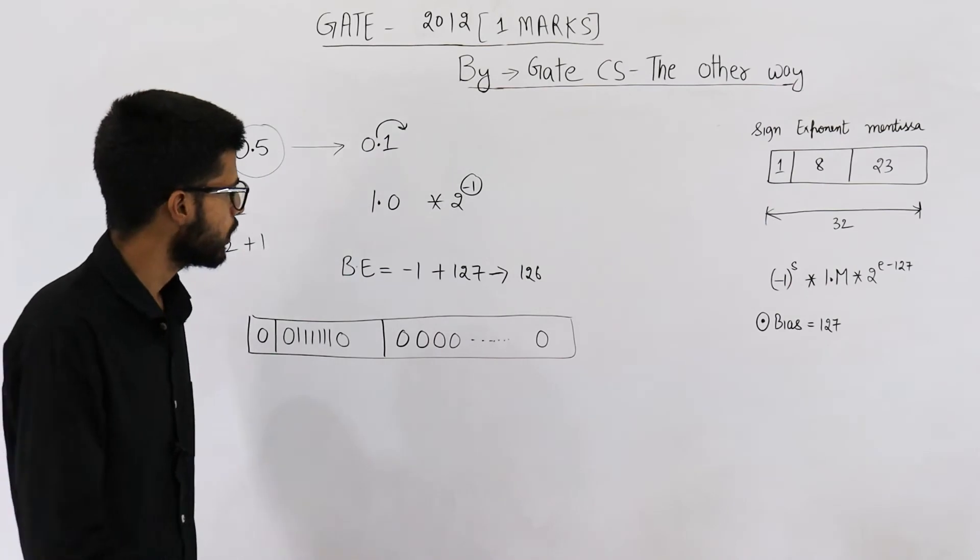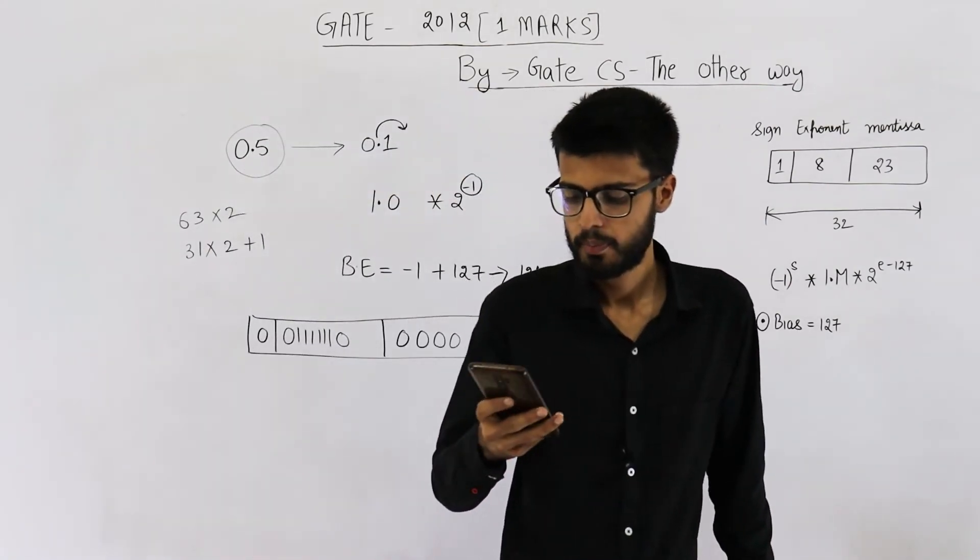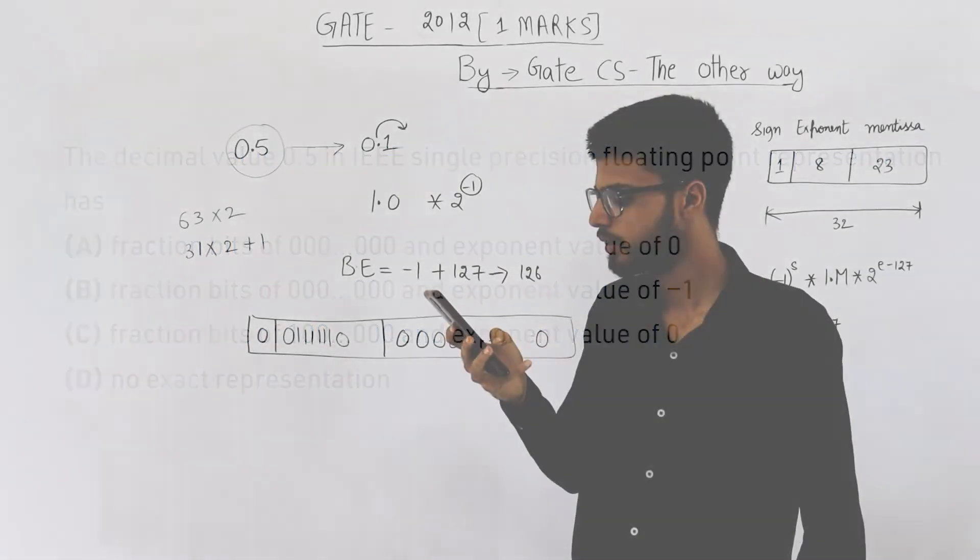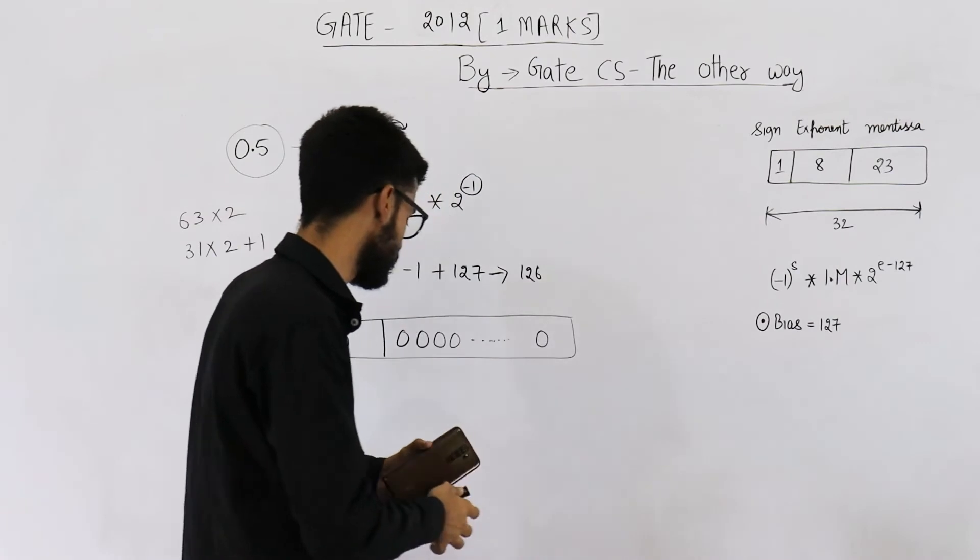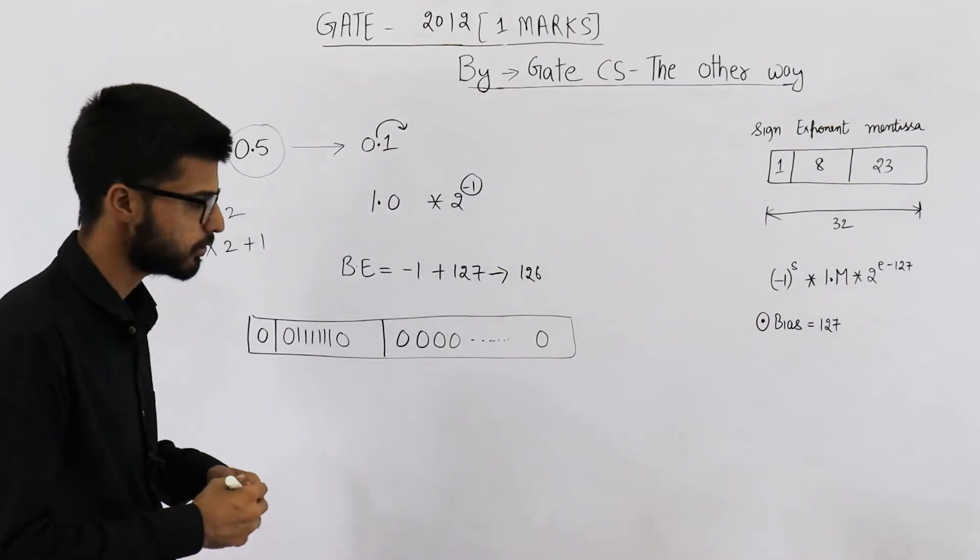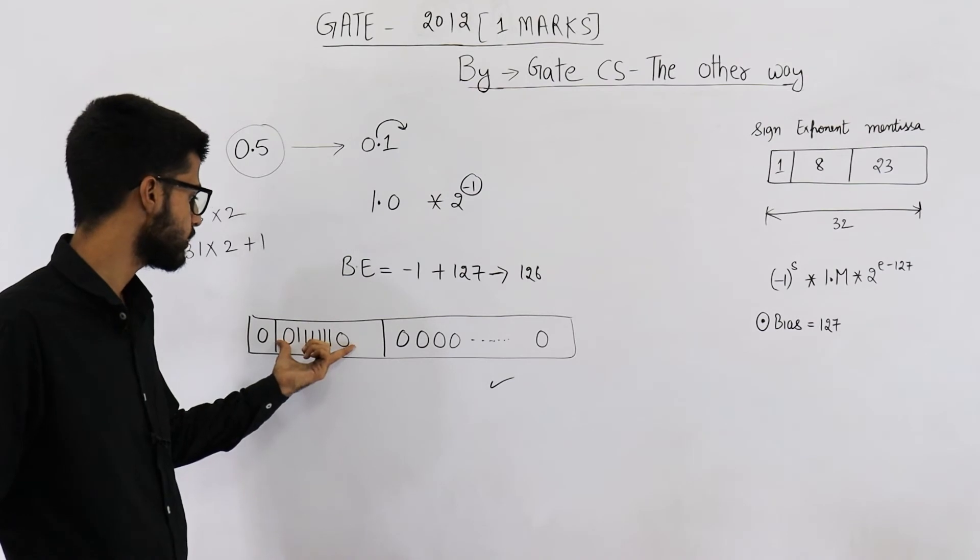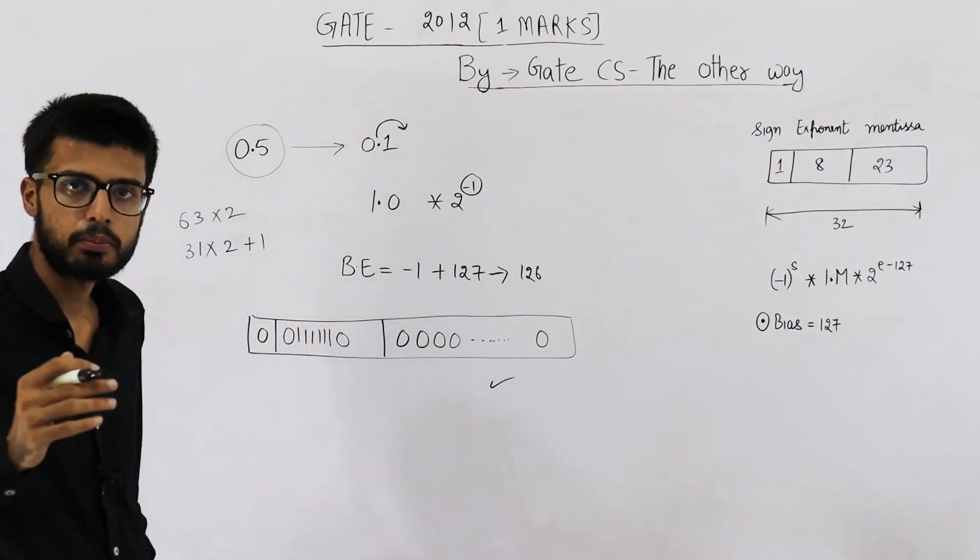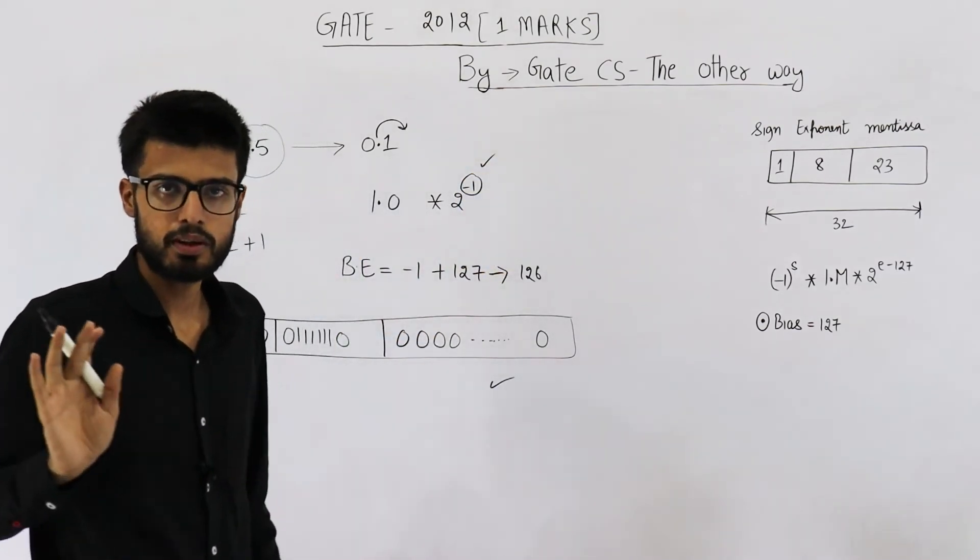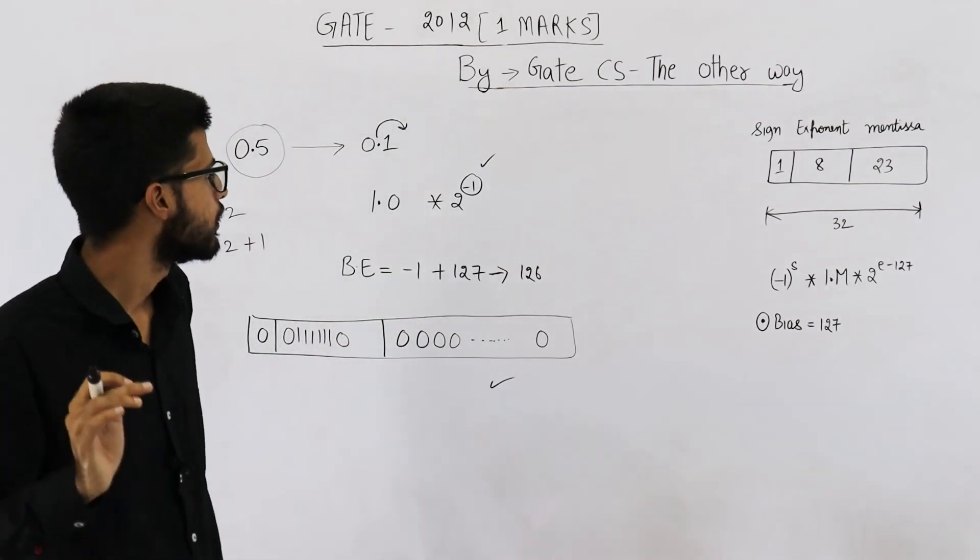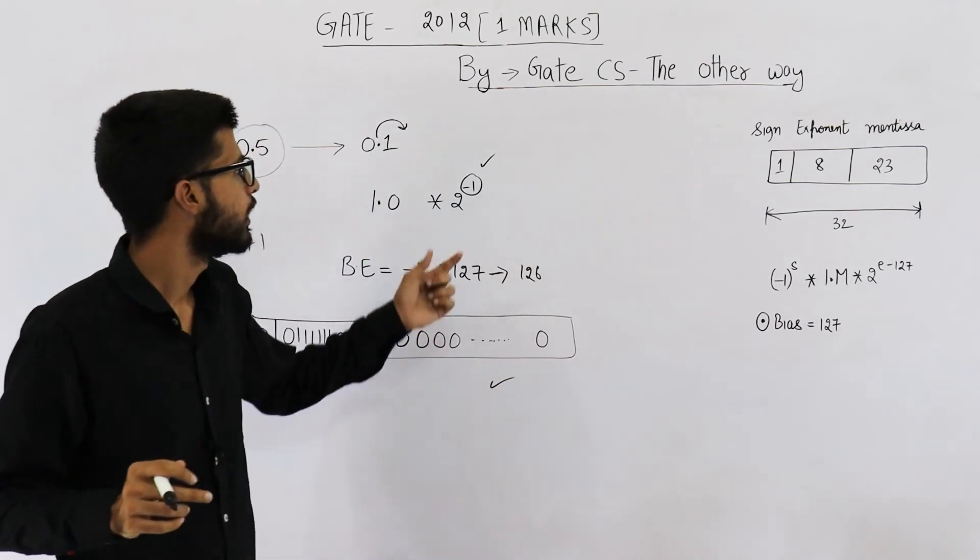So let us see what is the answer of this question. Just have a look at these options. Option A is fraction bits of 0 and exponent value of 0. No, that's incorrect. Option B is fraction bits of 0 and exponent value of minus 1. Yeah, this seems correct. See, fraction bit means mantissa part. Mantissa is 0. That means fraction bits are 0 and exponent is minus 1. Even though we are saving 126 here, this pattern means 126, but actual exponent is minus 1. They are asking about the actual value of exponent. They are not asking what do these bits in the 32-bit pattern represent. So fraction bits are all 0s. Exponent is minus 1.